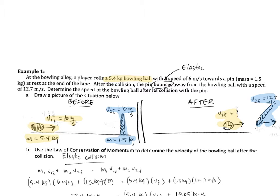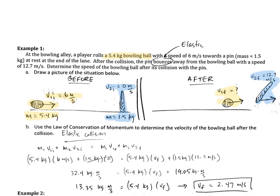So can we use conservation of momentum to figure out how fast the bowling ball is moving afterwards? Yes, we can. We're going to start by identifying this as an elastic collision, which is actually defined as a collision where kinetic energy is conserved. That's the real definition. And we're going to start with the elastic collision equation here.